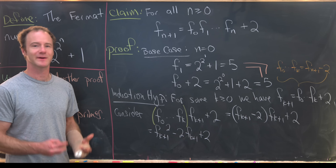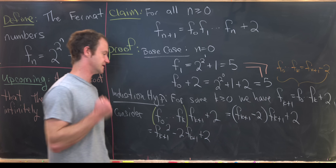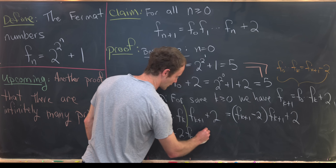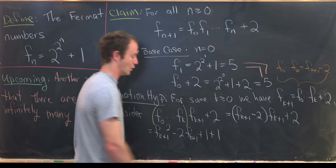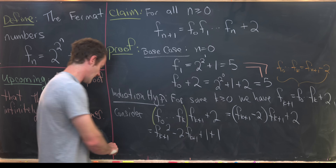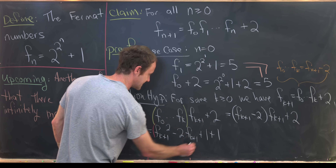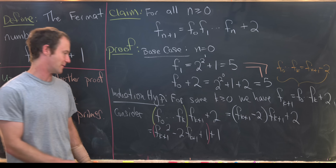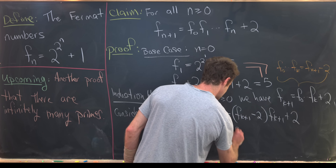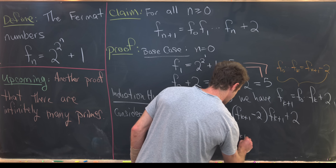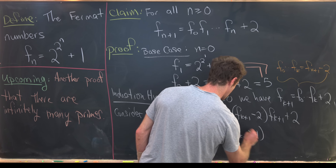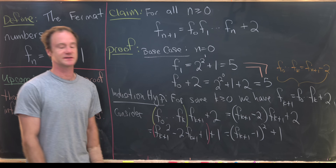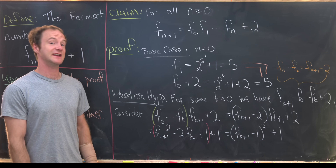Now we can plug in the definition for F sub k plus 1, but there's a trick: replace the plus 2 with plus 1 plus 1, and group terms in the red parentheses. That's a perfect square — it equals the quantity F sub k plus 1, minus 1, squared, plus 1.